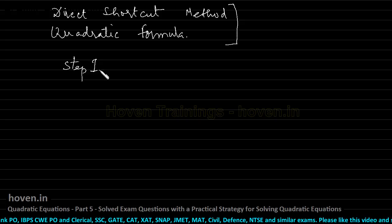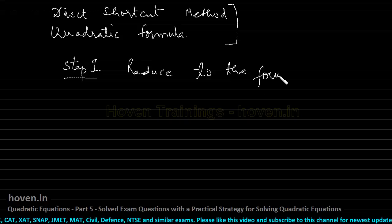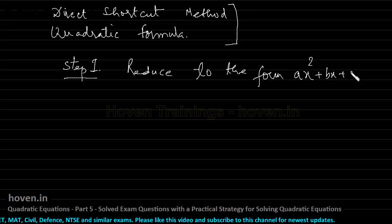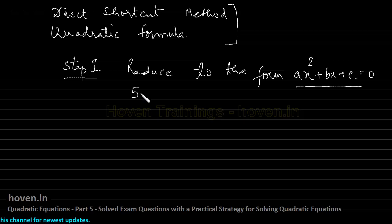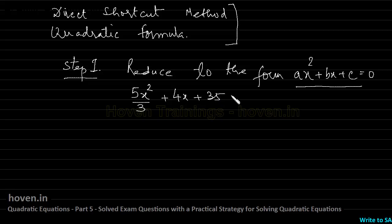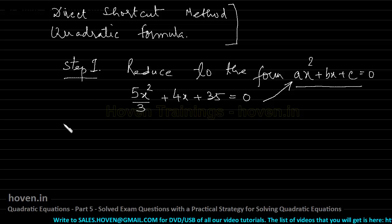The first step is to reduce the quadratic equation to the standard form ax² + bx + c = 0. You should reduce your equation to this standard form if it is not already in this form. For example, if an equation has a fraction part, it is better to convert it into standard form. If the equation is already in this form, you can skip to step 2.